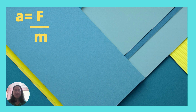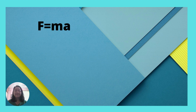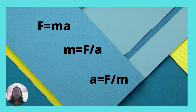In equation, A is equal to F divided by M, where A means acceleration, F for force, and M is equal to mass. Another equation you should know is that force is equal to mass times acceleration. If you are looking for the mass of an object, it is force divided by acceleration. To complete our formula, acceleration is equal to force divided by mass.